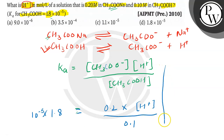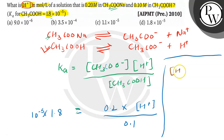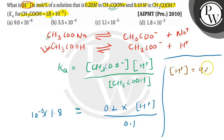Writing this out, the concentration of H⁺ ion — on solving — we get 9 × 10⁻⁶. That is option A.